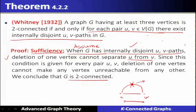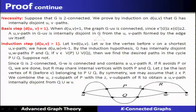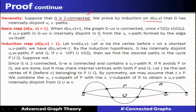Now, the necessary condition: we assume that graph G is two-connected and have to prove that there exist internally disjoint U-V paths for every pair of vertices. We prove by induction on the distance between U and V that G has internally disjoint U-V paths. The base step assumes that the distance between U and V is 1.